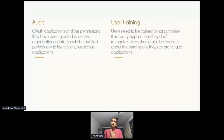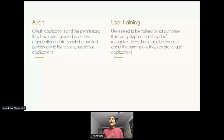Users should also be cautious about the permissions they're granting to third-party applications. For example, offline access and access to read emails should excite higher suspicion, because attackers can then make API calls to discover other sensitive data.